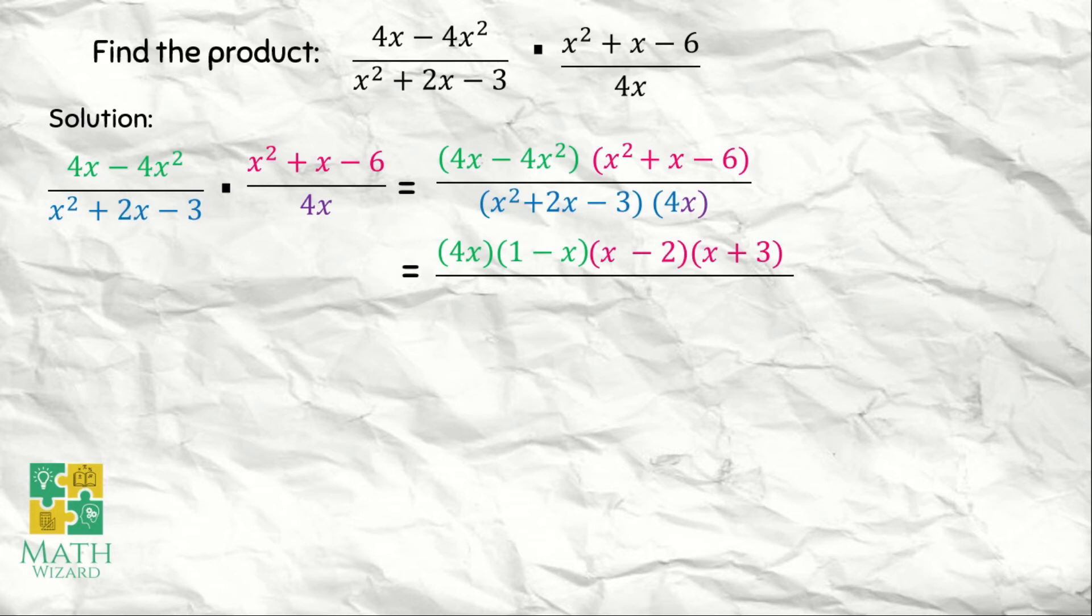Next, for x squared plus 2x minus 3, what are the factors of 3? When you multiply them, the answer is negative 3, and when you add or subtract them, the answer is positive 2. That would be negative 1 and positive 3. Negative 1 times 3 is negative 3, and negative 1 plus 3 is positive 2. So the factors are x minus 1 times x plus 3. And then we copy 4x.